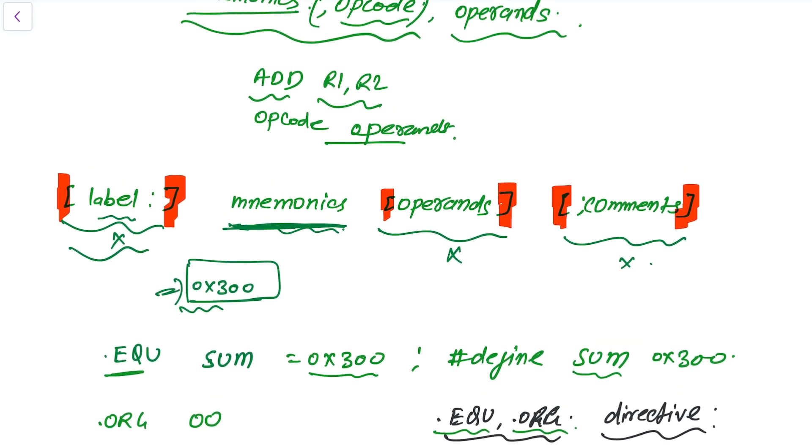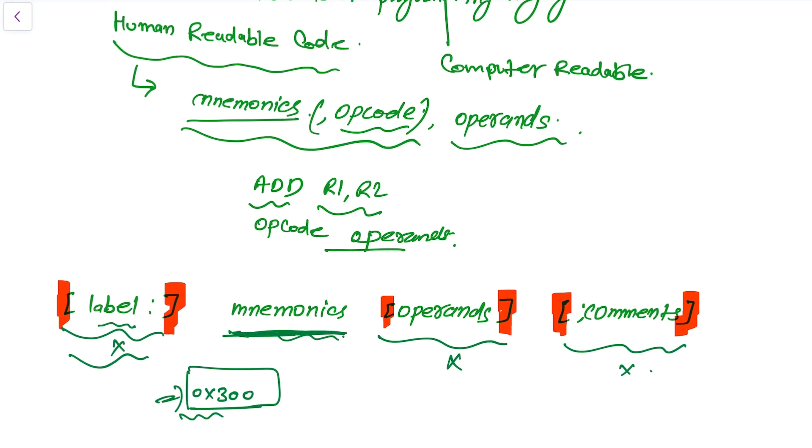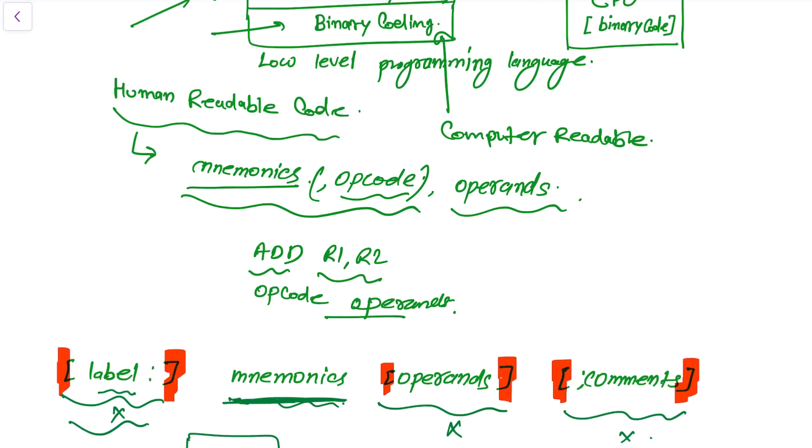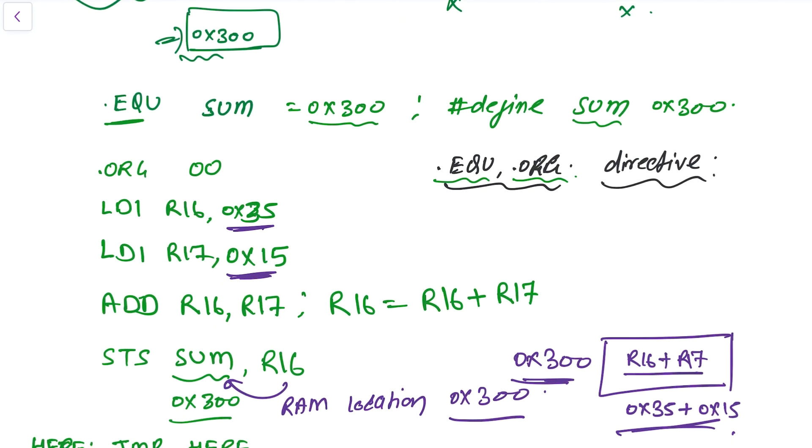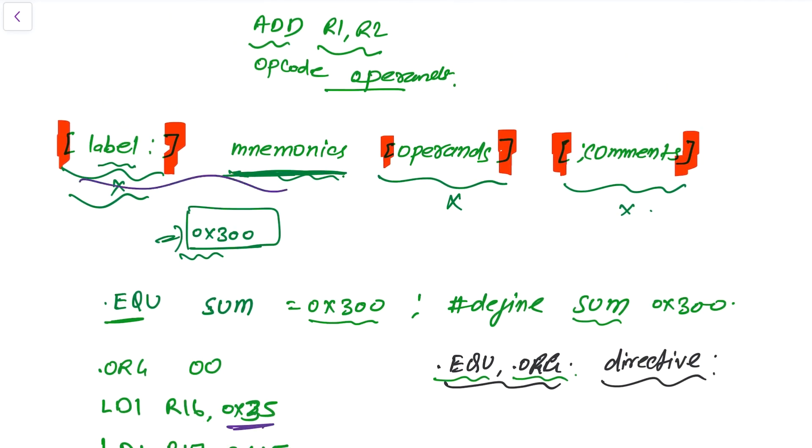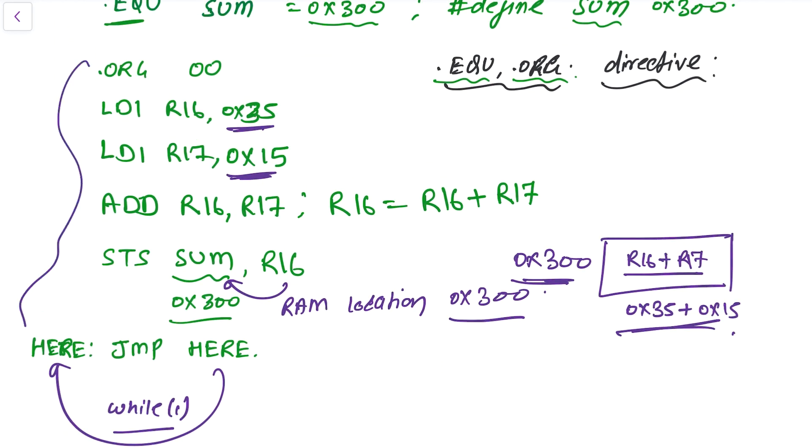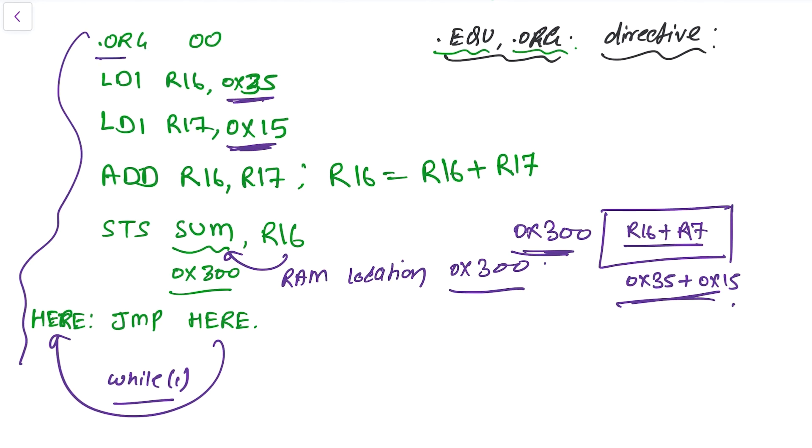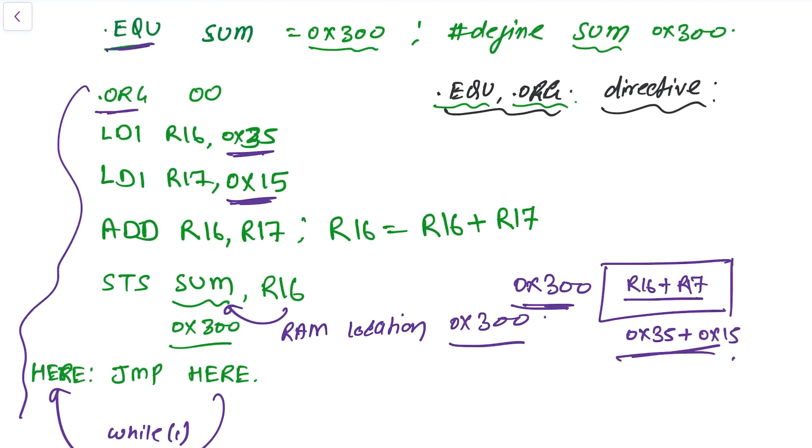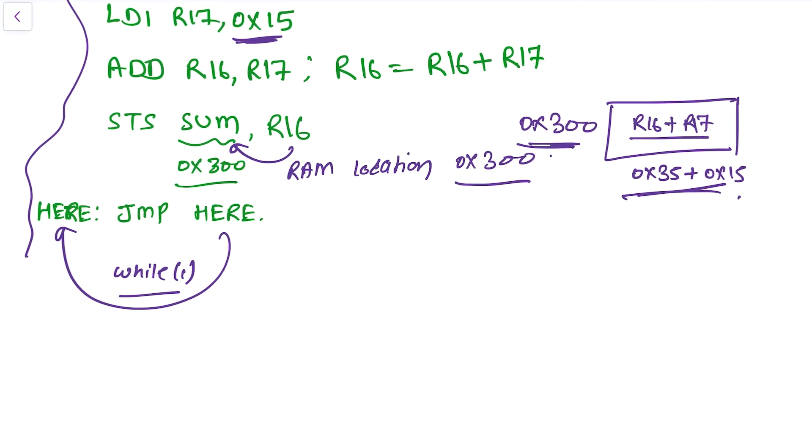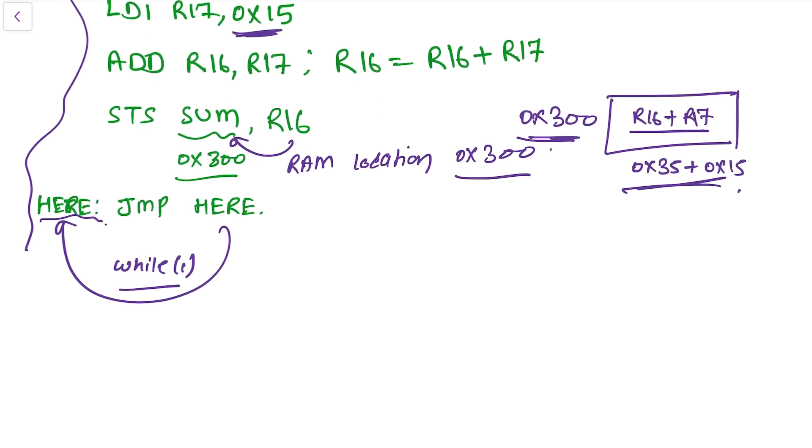So this is all about in this video, in which we have learned about mnemonics, the operands, the opcodes, and then a general structure of assembly instruction. And then finally we had written a sample program here. We had seen how to represent, how to assign the directives, and then here is the label.